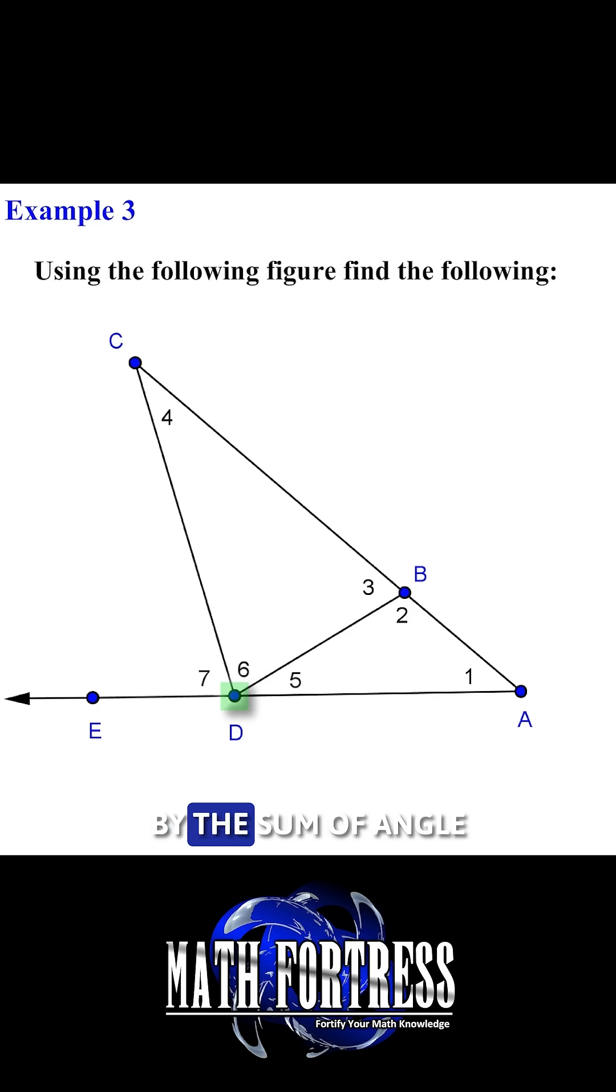The next angle is formed by the sum of angle 7 and 6 and can be named as angle EDB or angle BDE.